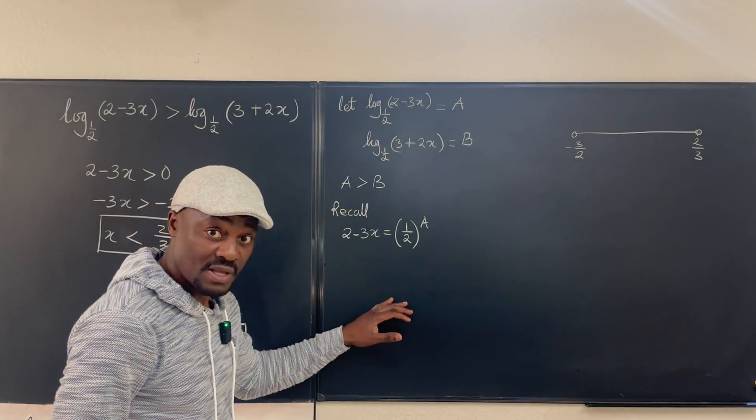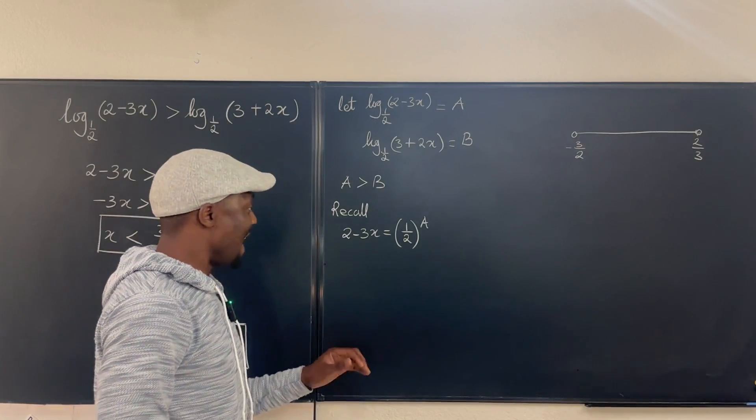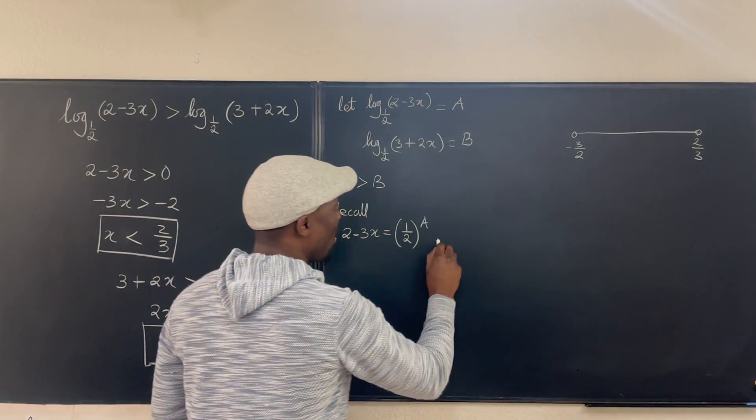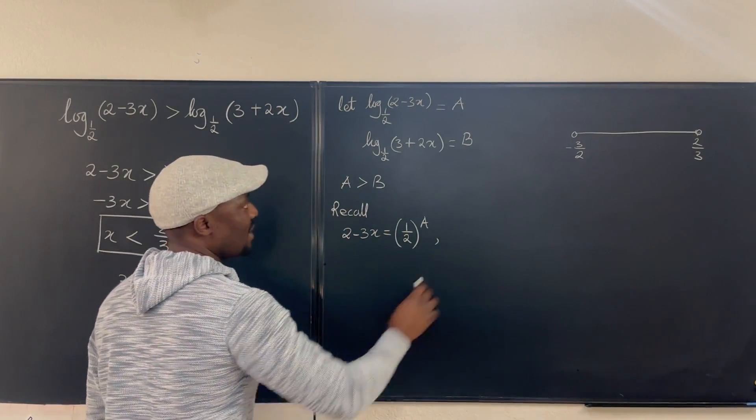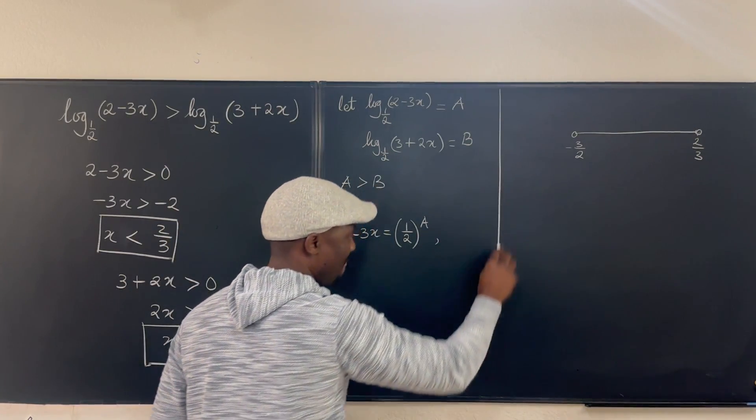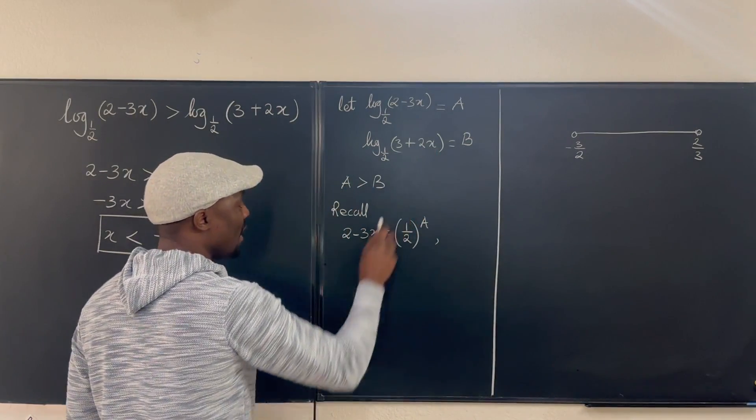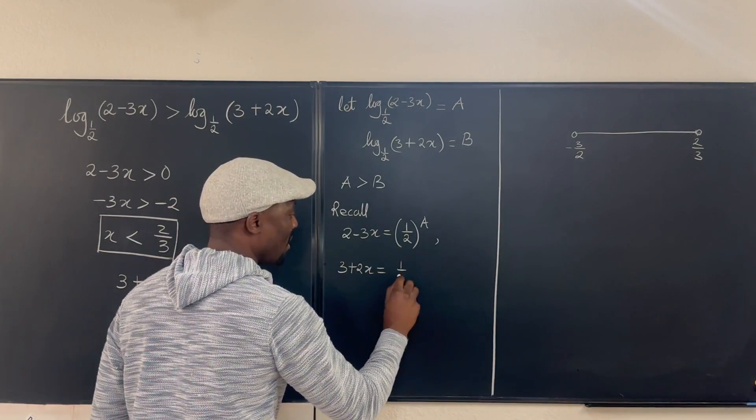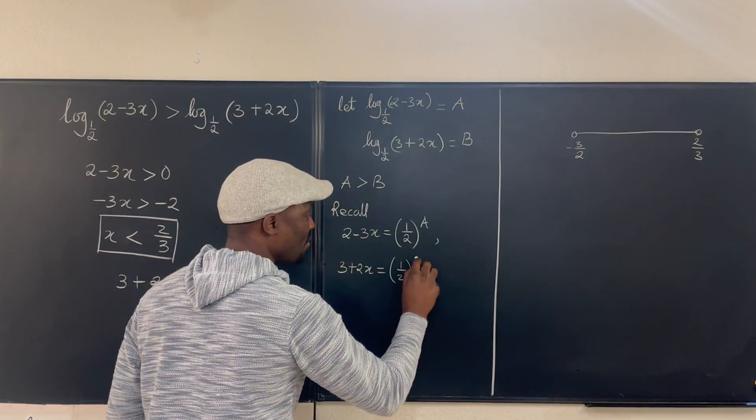You have to remember this, okay? Now, the same thing we know also, let's go this way so we can divide the board. So we also know that 3 plus 2x will be equal to one half raised to power B.